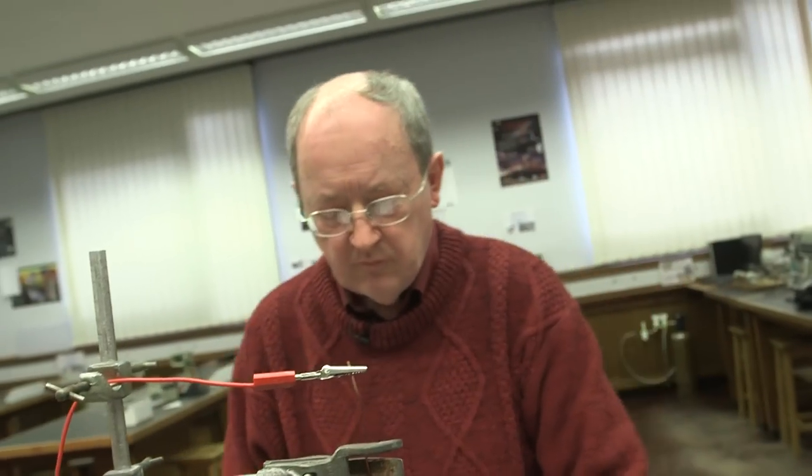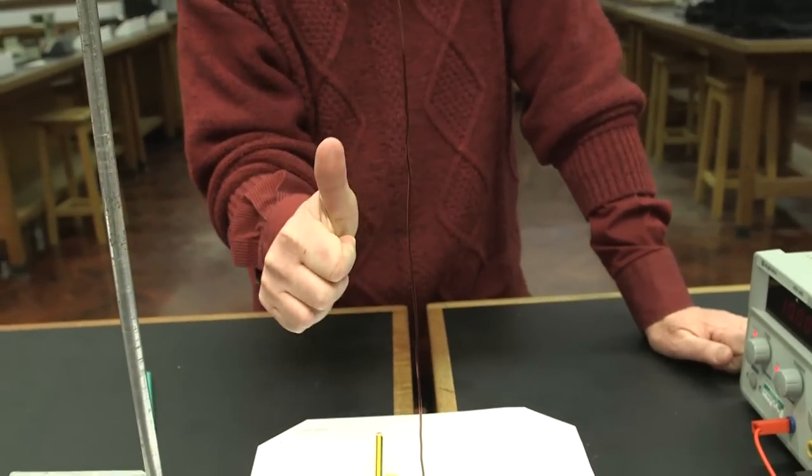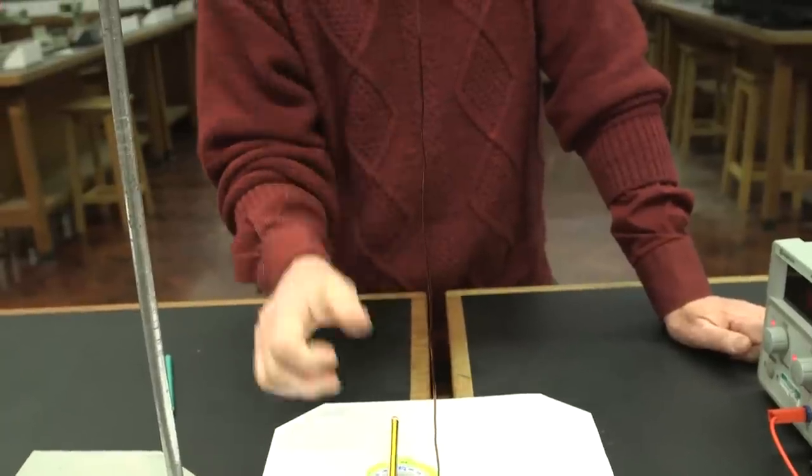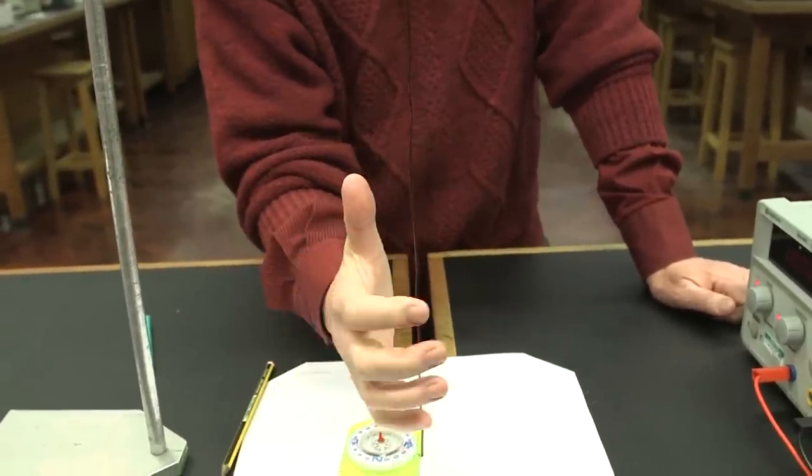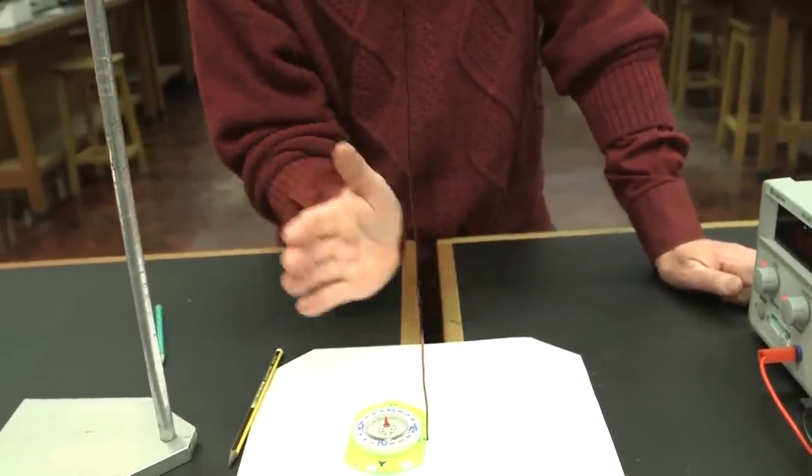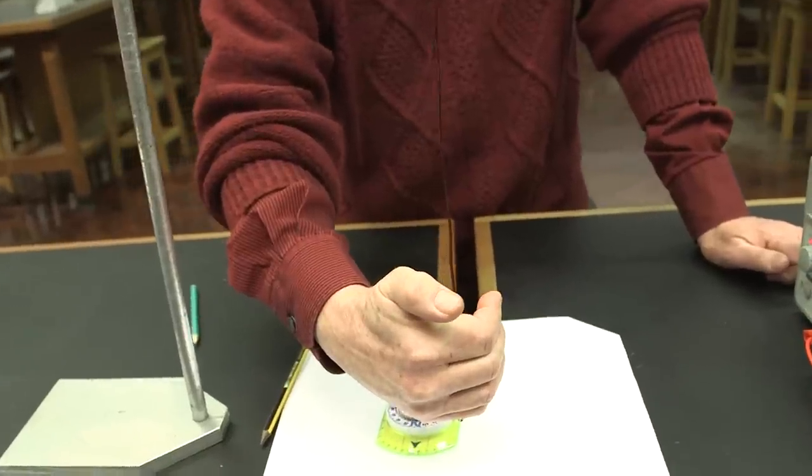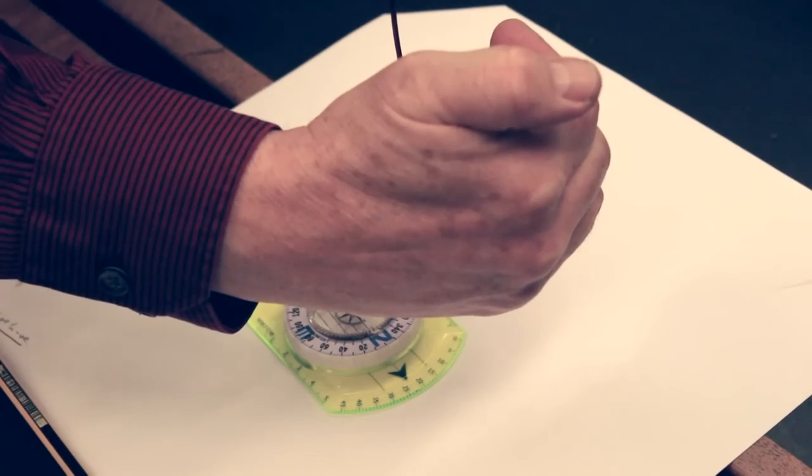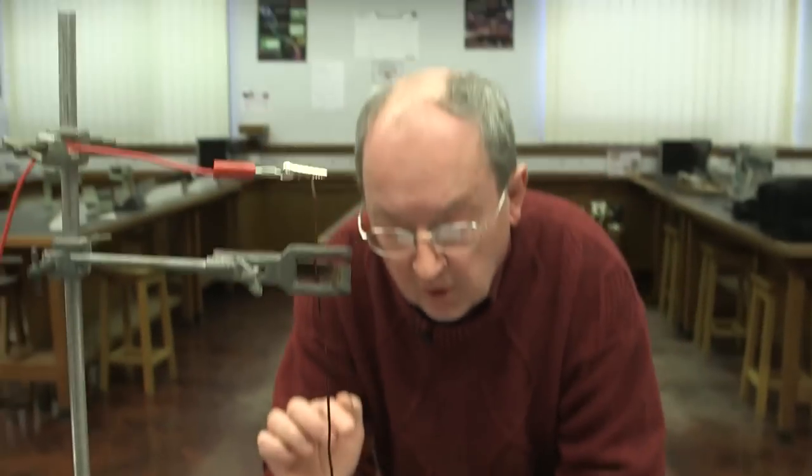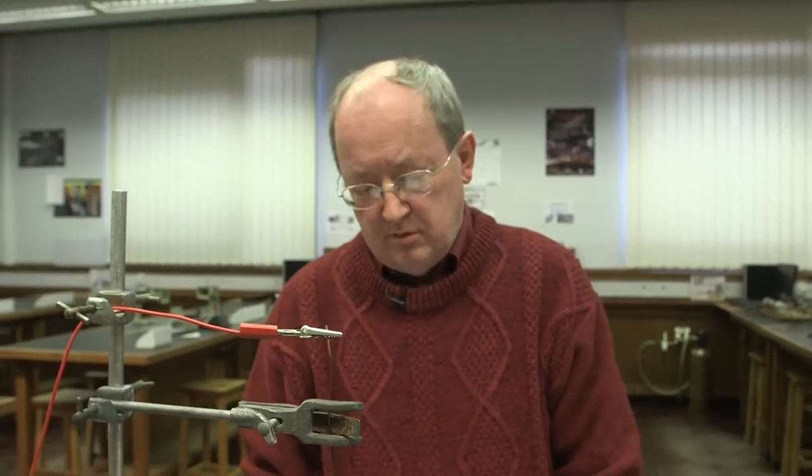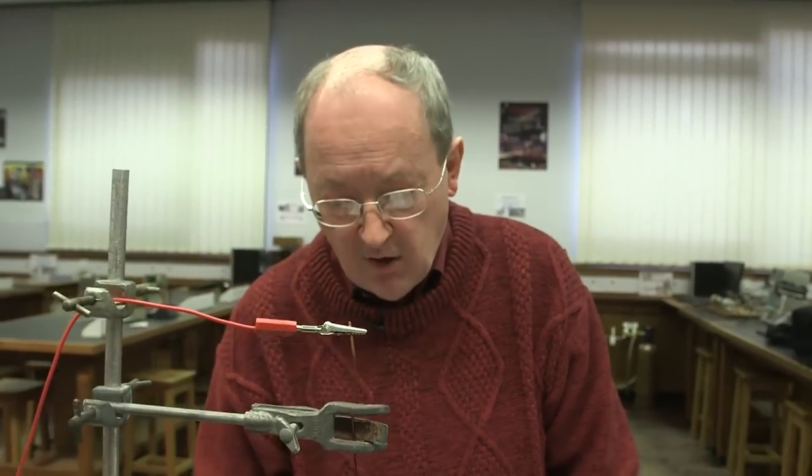Which way is the current flowing? We have a rule: if the current is flowing upwards, you point your thumb in that direction, and then your fingers curl around the wire, and that tells you the direction of the magnetic field. There's something called the right hand rule to tell you the direction. So you're seeing the first example of how a compass needle is moved by a current.